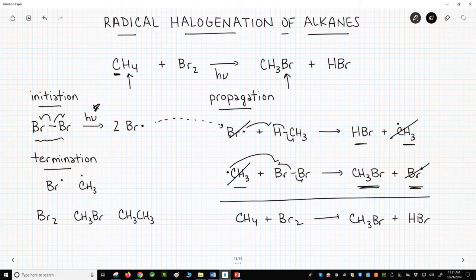If you're watching these videos in my suggested order, then you've seen other substitutions SN1, SN2, electrophilic aromatic substitutions, and nucleophilic substitutions via addition-elimination reactions. Radical halogenations are a fundamentally different type of substitution.